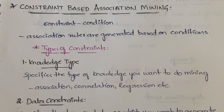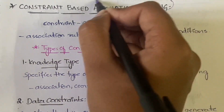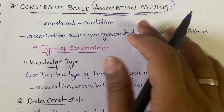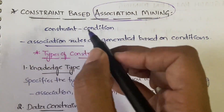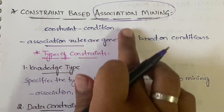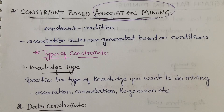So here also you will be defining or generating the association rules in association mining with the help of those association rules. These association rules are generated based on a particular condition — that condition can be anything: it can be knowledge, data, a dimension, interestingness, or anything. Based on some condition you will be defining the association rules, and by using those association rules you'll be doing mining. That is called constraint-based association mining.